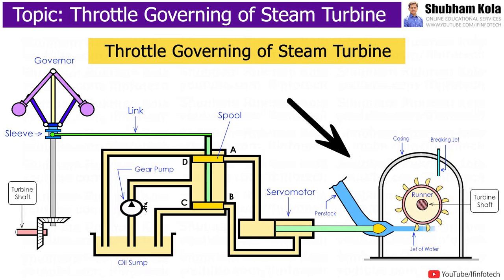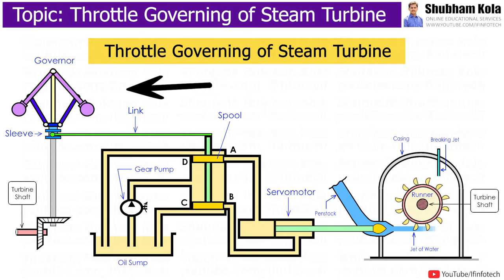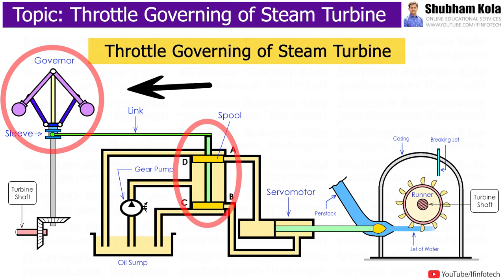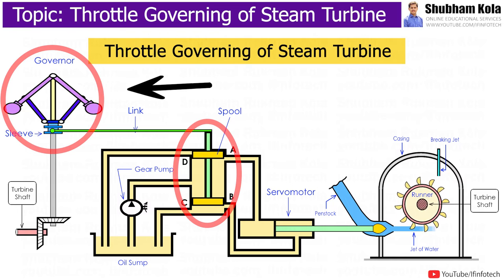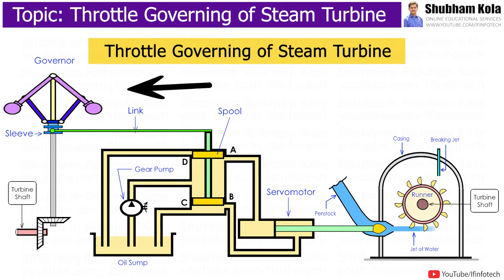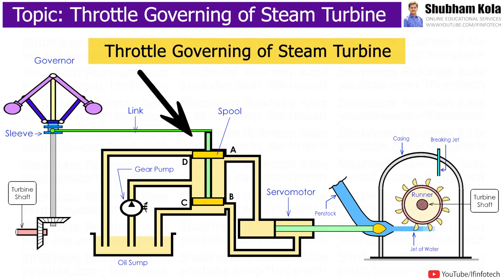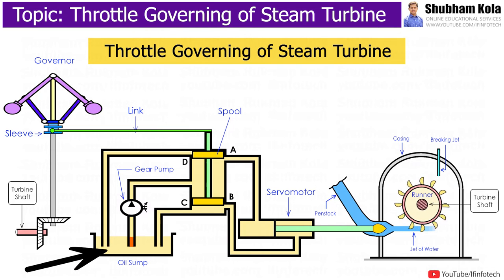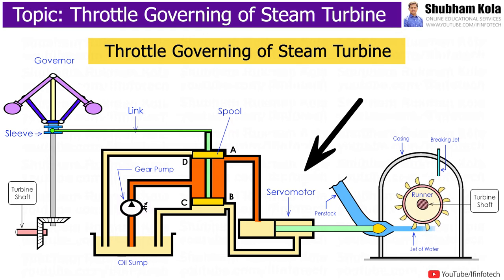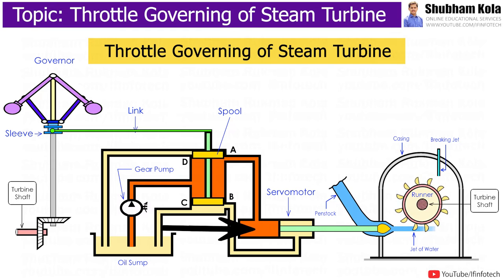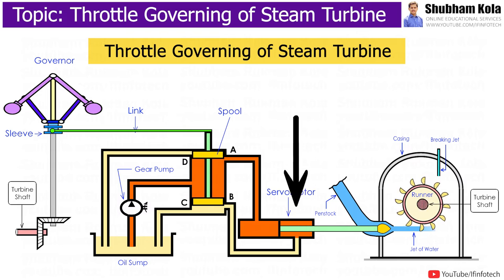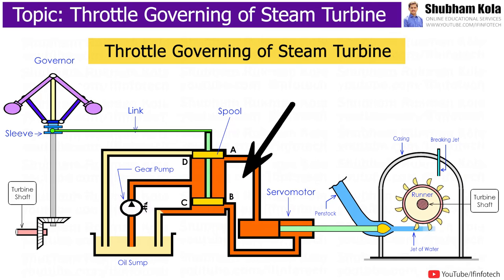Now let us assume the load on the generator is suddenly reduced. Since the power developed by the turbine is more than the load, the turbine and governor speeds will increase due to excess energy. The governor balls will fly out and raise the sleeve of the governor. Consequently, this link will pull the spool in the upward direction. The oil supplied under pressure will flow through pipe A to the servo motor, forcing the piston, while oil from the servo motor is drained out through pipe B.